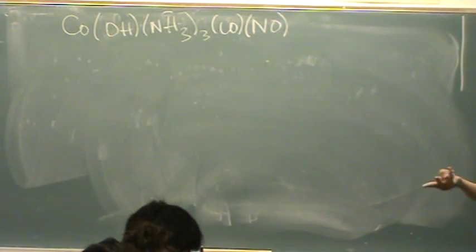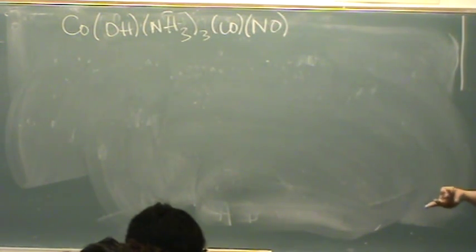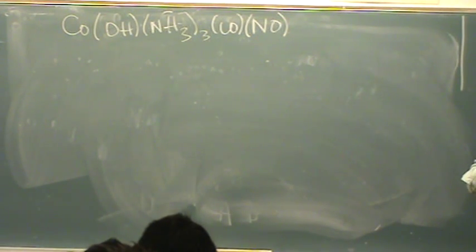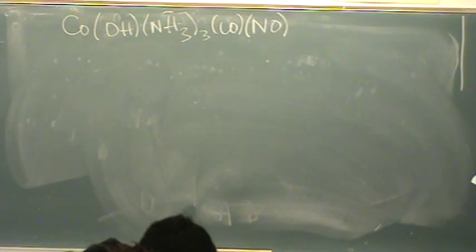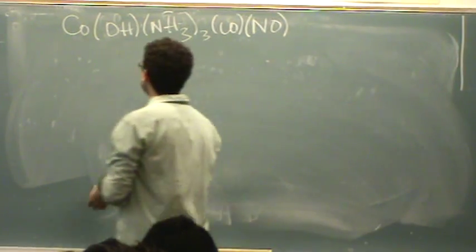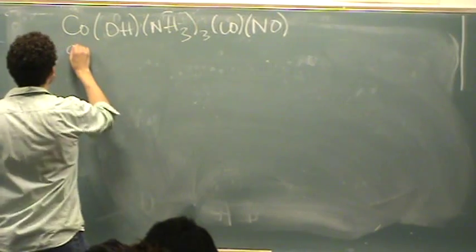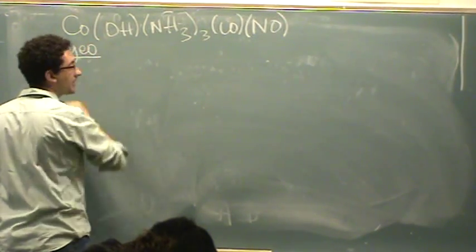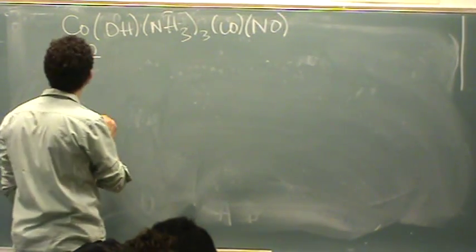Geometric has to do with cis-trans, fac-mer. The optical isomers have to do with mirrors and mirror images. So let's do those two problems separately — you're going to see they're going to be a little intertwined. First, let's try the geometric over here on the left-hand side.